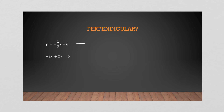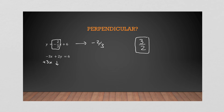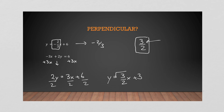For this example, the slope is already visible: -2/3. The negative reciprocal of -2/3 is 3/2 — we flip the fraction and since a negative times a negative is positive, the result is positive 3/2. Now doing the algebra on the second equation: add 3x to both sides to get 2y = 3x + 6, then divide by 2, giving y = (3/2)x + 3. The slope is 3/2, which is indeed the negative reciprocal of -2/3, so these lines are perpendicular.